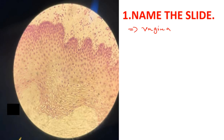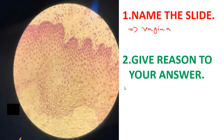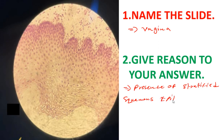The vagina is made up of stratified squamous epithelium, which is non-keratinized — please take note of that. Give reasons for your answer: the presence of stratified squamous epithelium which is non-keratinized.